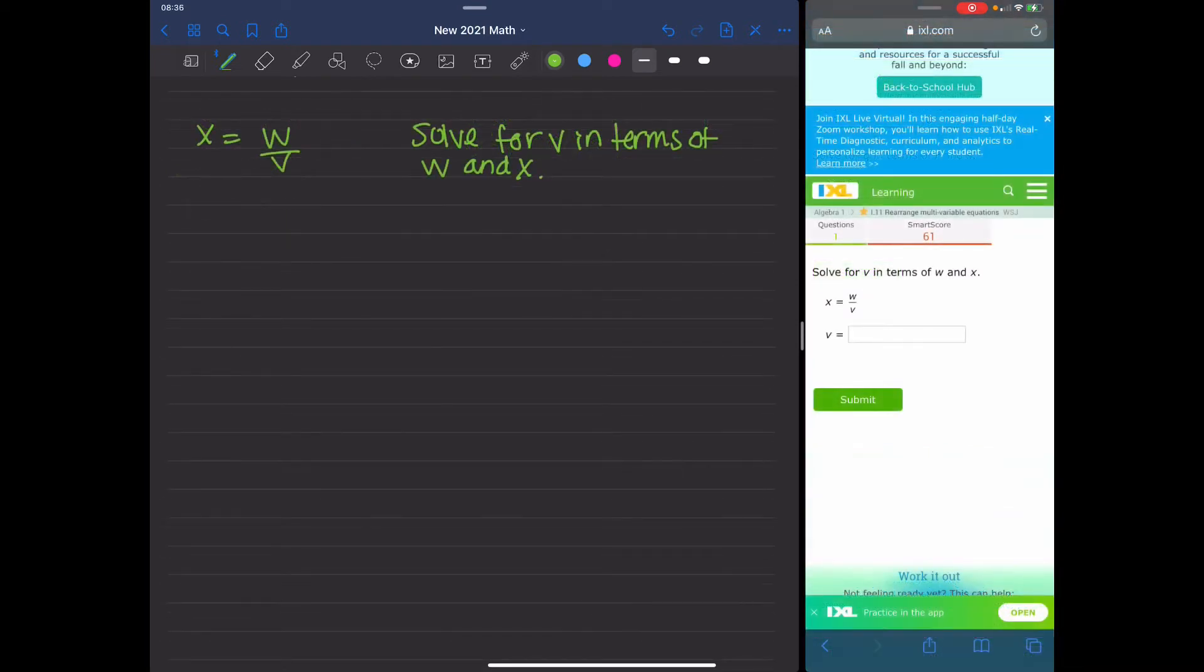Okay, so here's the next question. It says X equals W divided by V. Solve for V in terms of W and X. That means I want to get V by itself. So we need to move V into the numerator. So to do this, I'm going to multiply V on the left-hand side, and I'm going to multiply V on the right-hand side because I want to get rid of V as a denominator.